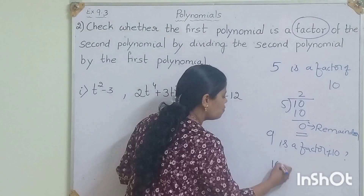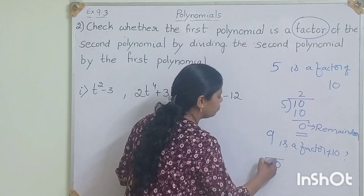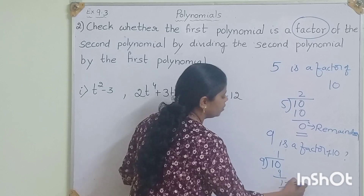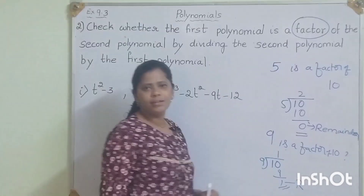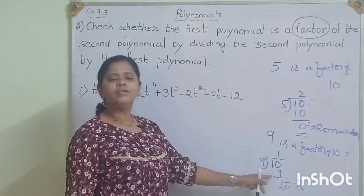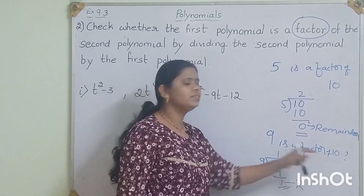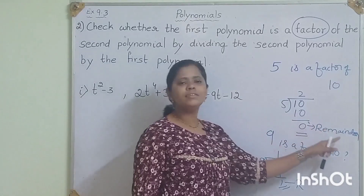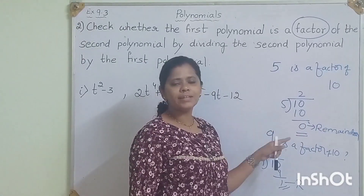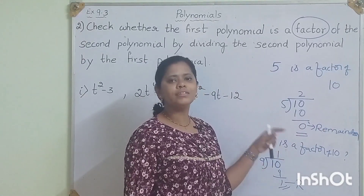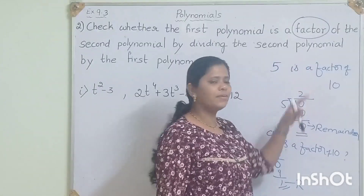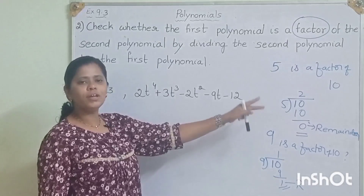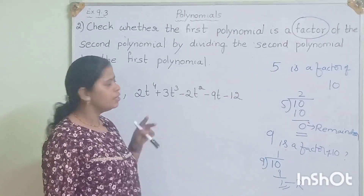So 9 is not a factor of 10. We have to get 0 as remainder — then only we can say that the given number is a factor of the given number. Hope you have understood the meaning of factor.